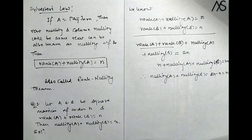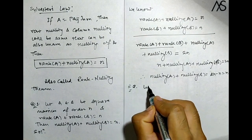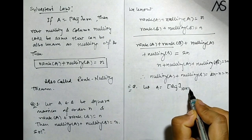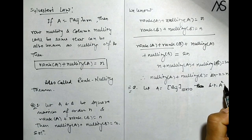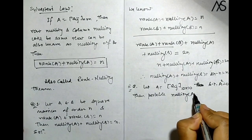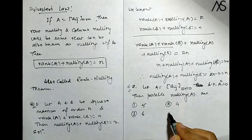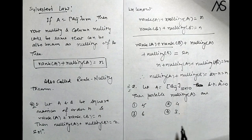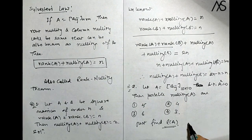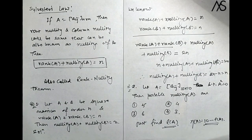So rank(A) + nullity(A) is always equal to n for a square matrix, where n is the order of the matrix. Question 2: Let A be a square matrix of order 10 such that A² = 0. Then the possible nullity of A from options: 5, 4, 3, 6, 4, 30 — find the possible nullity. We know nullity(A) = n − rank(A), so we just find the possible rank of A.